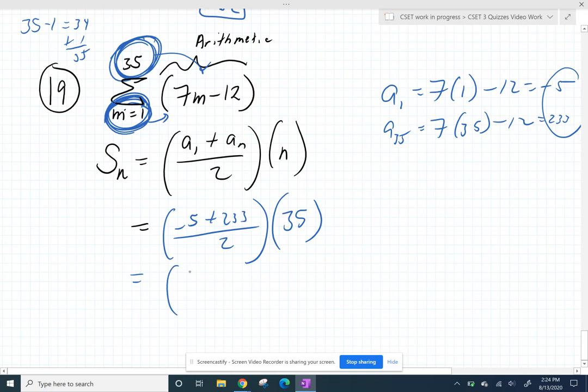So now we're just going to figure this out. We're almost there. So 228 divided by 2 times 35. 228 divided by 2 is 114 times 35 gives you 3990.